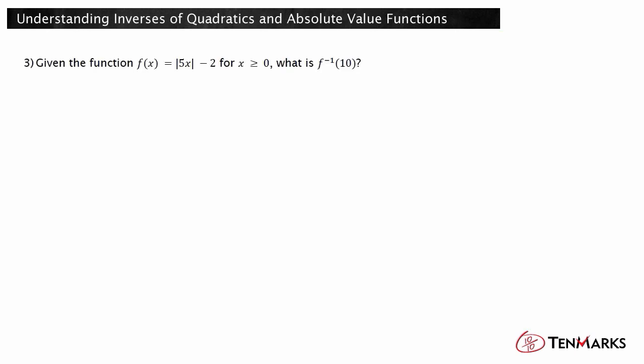Let's look at one more example. Given the function f of x equals the absolute value of 5x minus 2 for x greater than or equal to 0, what is f inverse of 10? To find f inverse of x, exchange the x and y, and then solve the resulting equation for y. Replace f of x with y: y equals the absolute value of 5x minus 2. Add 2 to each side: x plus 2 equals the absolute value of 5y. To solve an absolute value equation, rewrite the equation in two parts — one part where the value inside the absolute value bars is positive, and the other where it is negative.